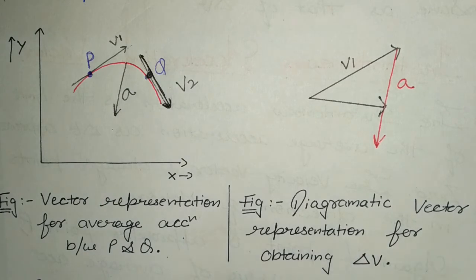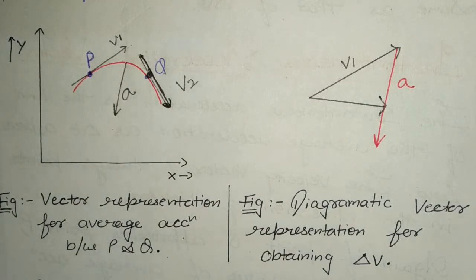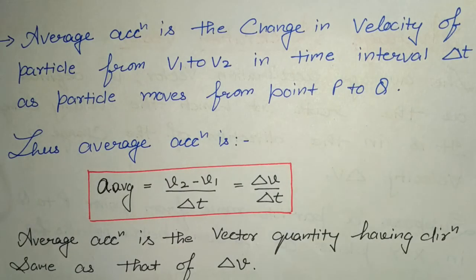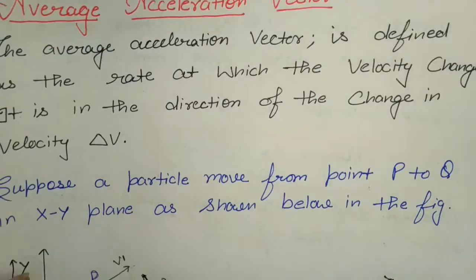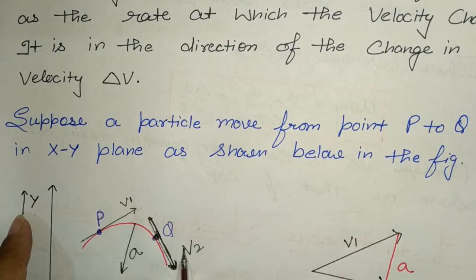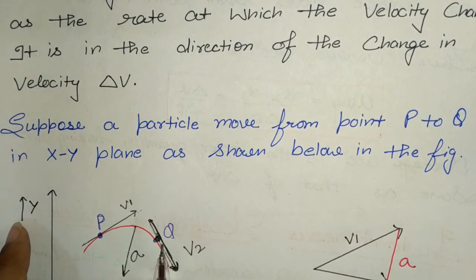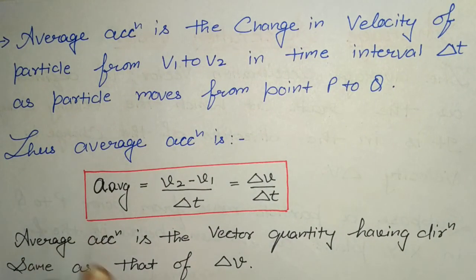This is the diagrammatic vector representation for obtaining delta V. The average acceleration is the change in velocity of the particle from V1 to V2 in the time interval delta T, as the particle moves from point P to Q. P has velocity V1 and Q has velocity V2.